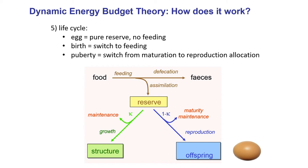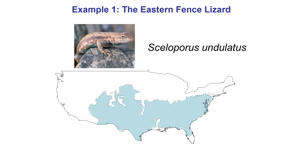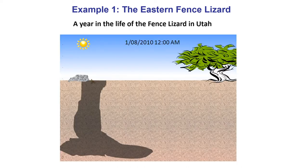So that's DEB theory in about 10 minutes — a quick overview, but hopefully it gives a sense of what it does. Now we can think about how this couples with the biophysical model of heat and water exchange as driven by microclimatic conditions. To illustrate this integration, I'll use the example of an American lizard — the eastern fence lizard, Sceloporus undulatus — with its distribution across the US shown here in blue.